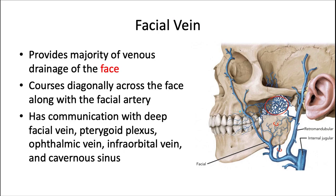The facial vein provides the majority of venous drainage of the face, draining into the internal jugular vein via the common facial vein. This vein courses diagonally across the face along with the facial artery, taking the exact same route. Veins in the head have no valves, so blood can flow in either direction. This allows communication with the deep facial vein, the pterygoid plexus, the ophthalmic vein, the infraorbital vein, and the cavernous sinus — which we'll discuss shortly.